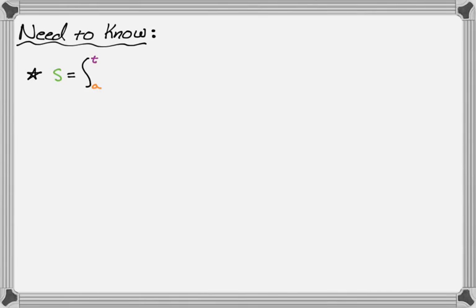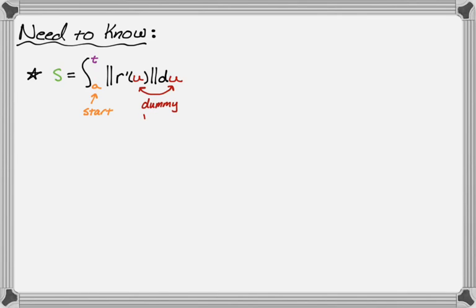That looks like this: s is the integral from a to t of the magnitude of r prime of u, du. There are four variables: s, a, t, and u. S is arc length, t is usually time. A and u are a little less clear. A is just where you're going to start — it's almost always given in the problem, and if not, you usually just choose something convenient, often just zero. U is just a dummy variable because typically r is a function of t, and we want the upper bound of our integral to be t, so we don't want to use t in the integrand.